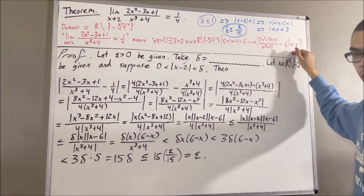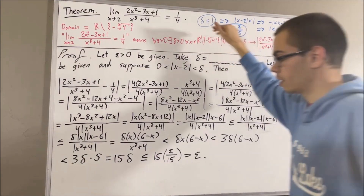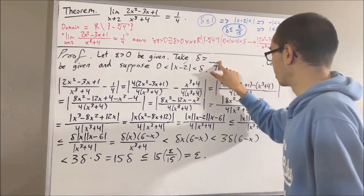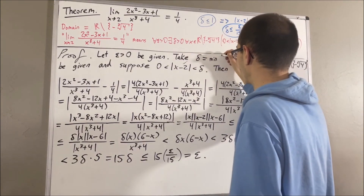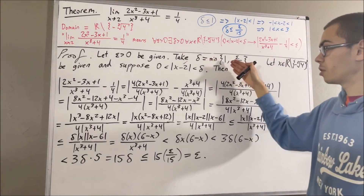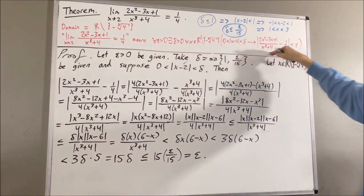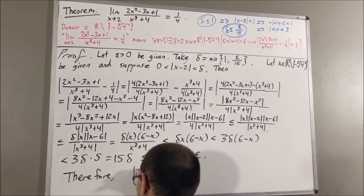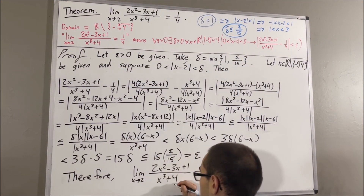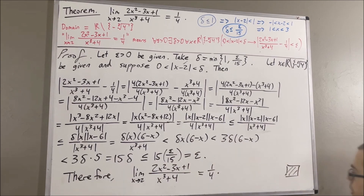And in doing so, we restricted delta so that delta is less than or equal to 1, and delta is less than or equal to epsilon over 15. So all we have to do is define delta to be the smaller of these two numbers. With that choice for delta, this argument follows, and so we have proven that this statement is true. That proves that the limit is true, and this completes the proof. That's pretty much it for this video. Thank you.